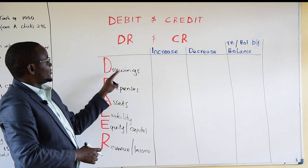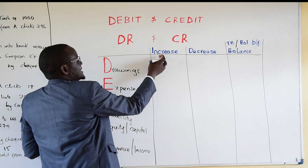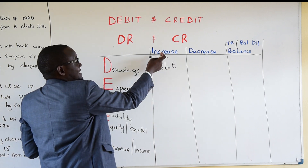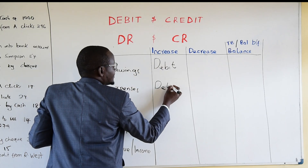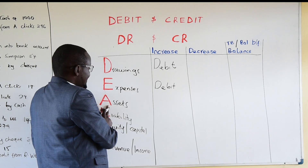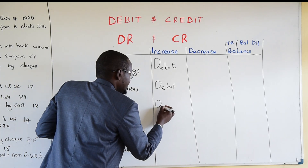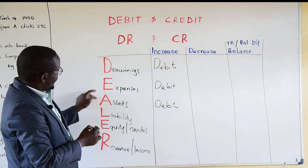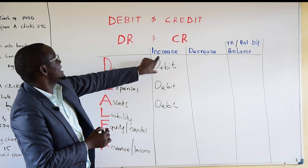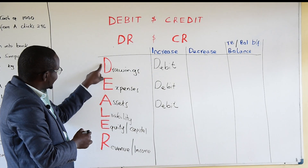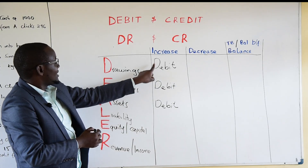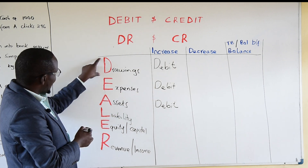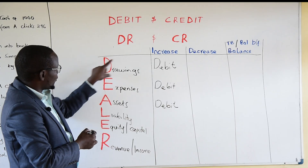Now, when to debit: when drawings increase, you debit. When expenses increase, you debit. When assets increase, you debit. Remember, the DEALER starts with a D, and the first three components — drawings, expenses, assets — all use debit for an increase. So the first three is debit, debit, debit for an increase.